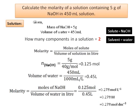Putting the values into the formula: molarity = 0.125 mol ÷ 0.45 L = 0.278 mole per liter, also written as 0.278 molar, or 0.278 mol per dm³. You should be familiar with all three units: mol/L, molar, and mol/dm³.